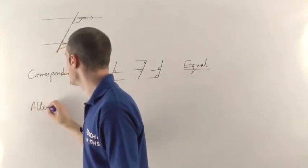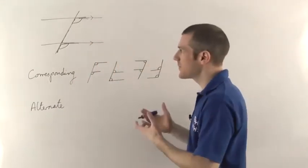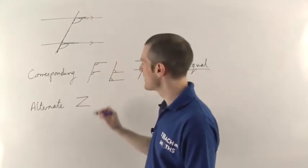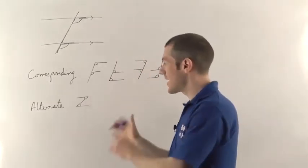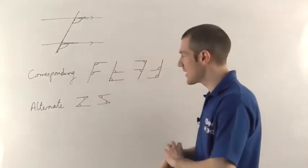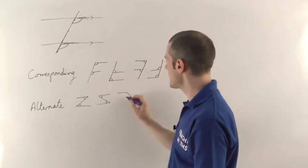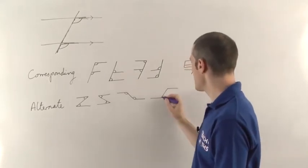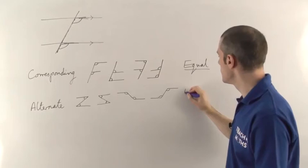The next type of angles are called alternate angles. Alternate angles are always going to be the same, and the shape I remember for this one is a Z shape. The two angles that sit in the crux of the arms of the Z are going to be the same — they're said to be alternate angles. You can flip it around and have a backwards Z shape, which looks more like an S shape — those two angles are still going to be the same. You can also have a stretched-out version, pulling the two arms apart — again, these two angles are alternate and the same. You can flip that round too. So alternate angles are also equal.